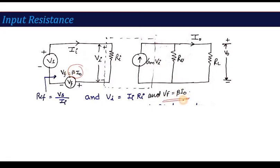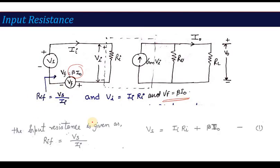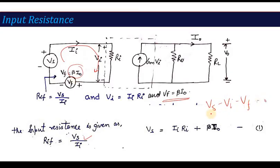The feedback voltage vf is equal to beta*i0. The next derivation is similar to the last lecture. Applying KVL: vs − vi − vf = 0, so vs = vi + vf. Here vi = ii*ri and vf = beta*i0. This gives us our first equation: vs = ii*ri + beta*i0.